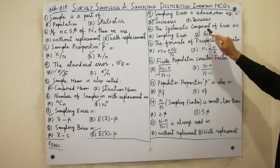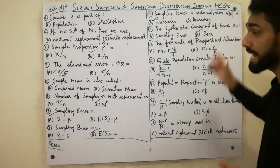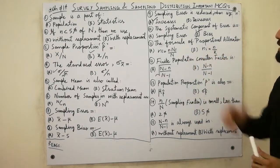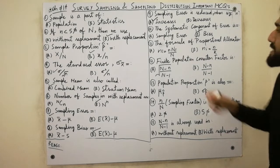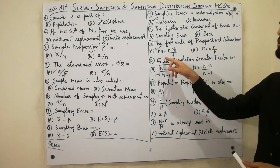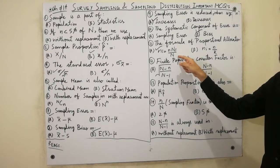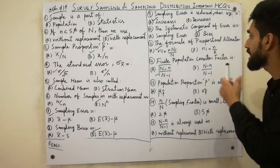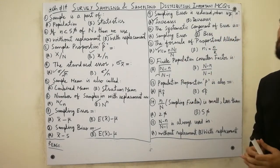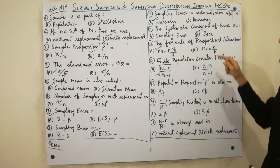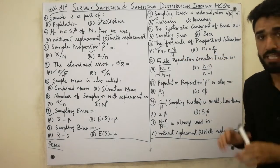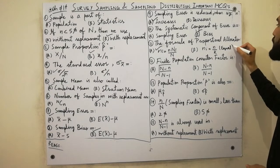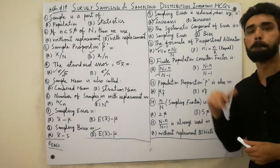The systematic component of error is called bias — that's very, very important. The formula of proportional allocation is: small n_i equals small n times capital N_i over capital N. That formula is used for proportional allocation, while equal allocation uses a different formula.